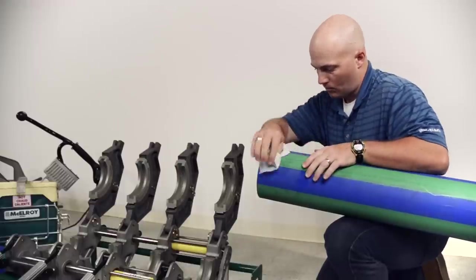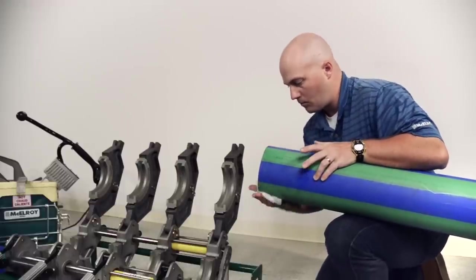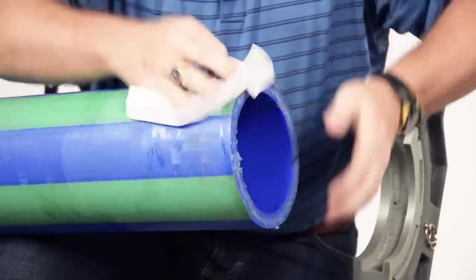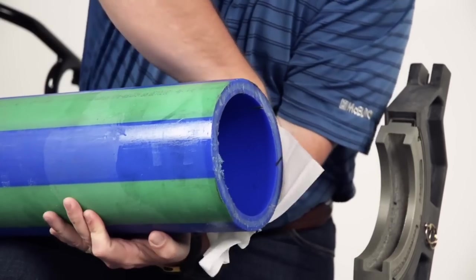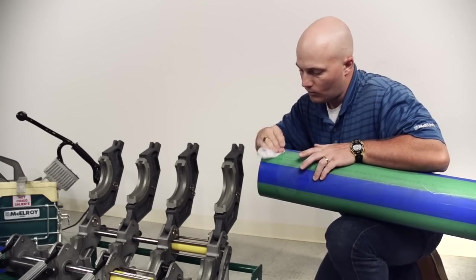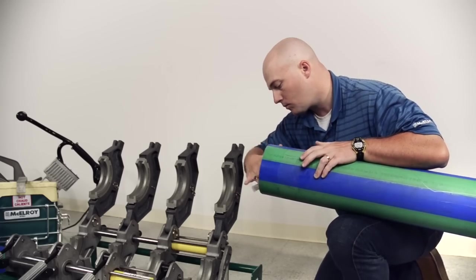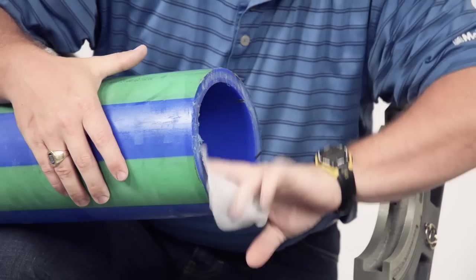Be sure that the pipe walls match. We don't want to fuse pipes of differing DR. Let's ensure that both pipe ends are clean. The best procedure for cleaning the pipe ends is to use a clean, lint-free cloth and rubbing alcohol. Ensure all possible contamination is cleared from the fusion area of the pipe, both inside and out.